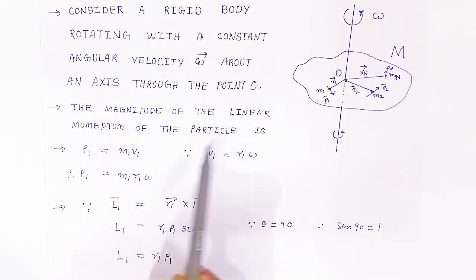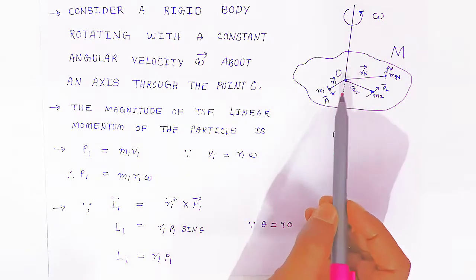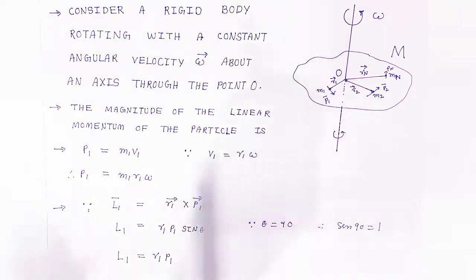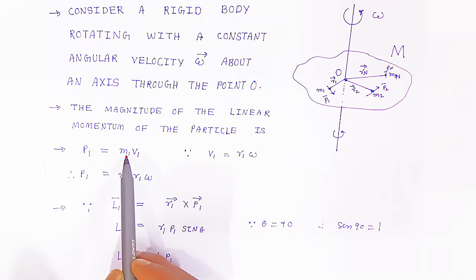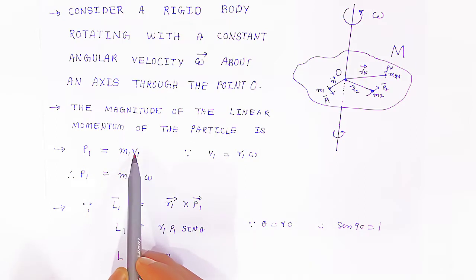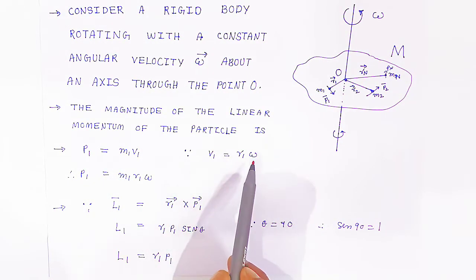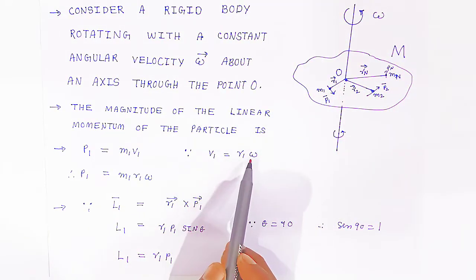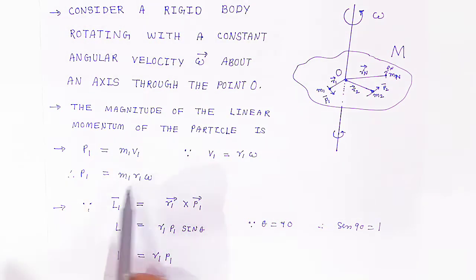The magnitude of the linear momentum of the first particle is P1 = M1·V1. The velocity V1 is related to angular velocity as V1 = R1·ω. Substituting, you get linear momentum in terms of angular velocity: P1 = M1·R1·ω.